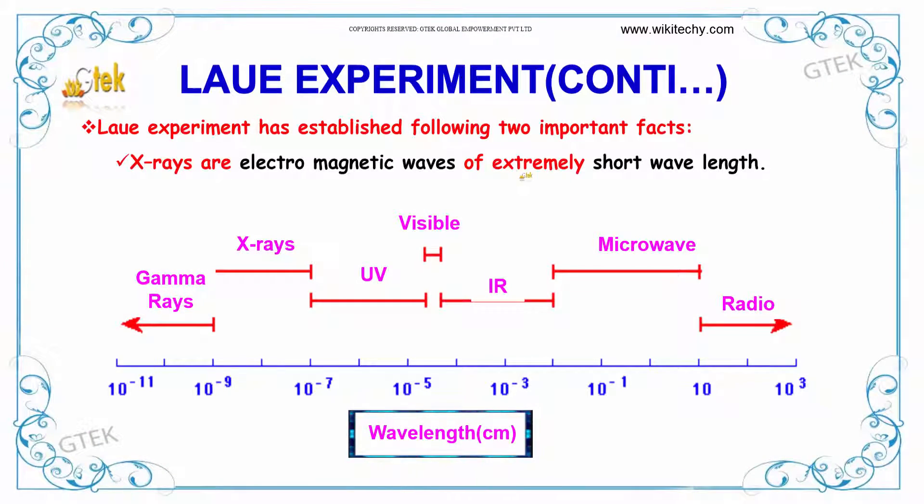The Laue experiment has established two important facts. The X-rays are electromagnetic waves of extremely short wavelength, whereas other electromagnetic waves have longer wavelengths.